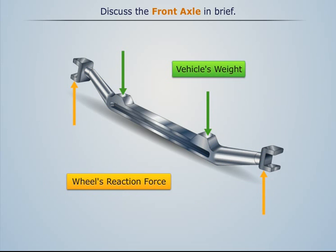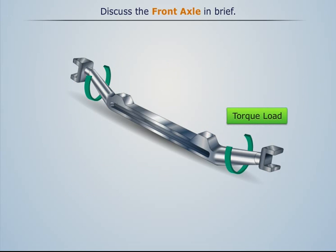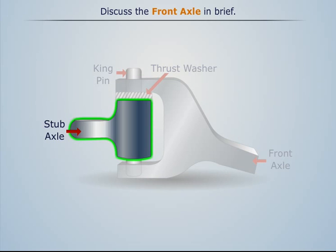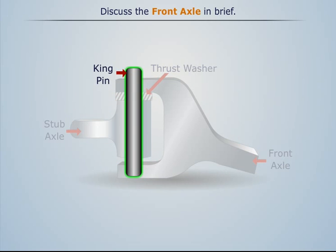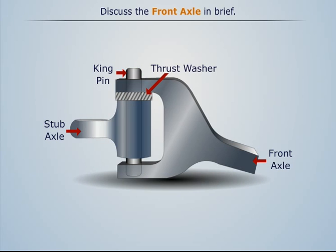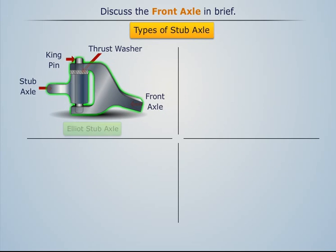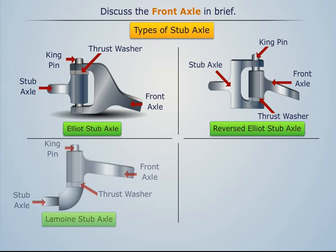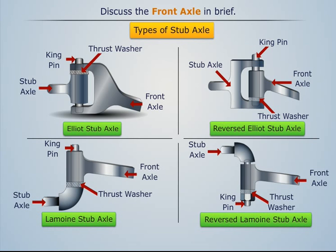The front axle mainly takes the bending loads due to the weight of the vehicle and the torque loads due to the braking of the wheels. The front axle is attached to the stub axle by means of a kingpin, and wheels are mounted directly on these stub axles. According to its shape, different types of stub axles are used: Elliot stub axle, reversed Elliot stub axle, Lemoyne stub axle, and reversed Lemoyne stub axle.